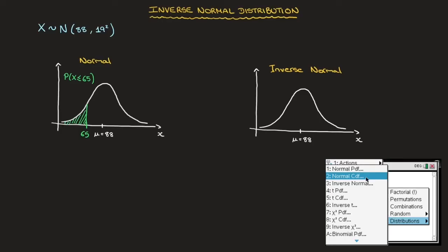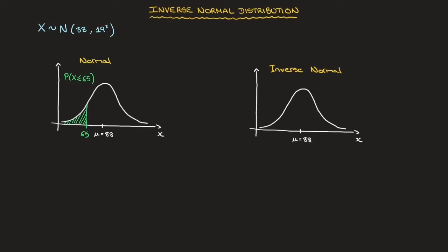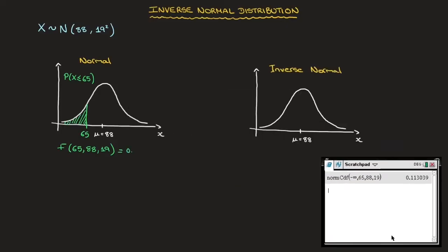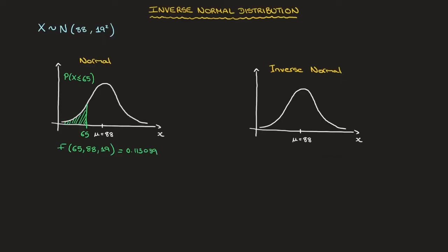With our calculators we'd use the cumulative distribution function, often called norm CDF, and we'd input the value of X — that's F(65) — as well as the parameters of our normal distribution: the mean, which is 88, and the standard deviation, which is 19. Entering all those values into our calculator leads to 0.113039, and rounding to three significant figures, that's 0.113. So the probability equals 0.113, which is equal to the green area under the bell curve.